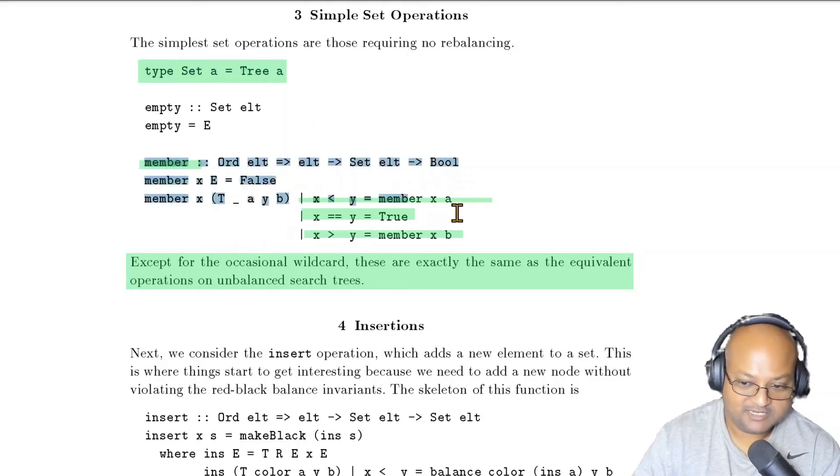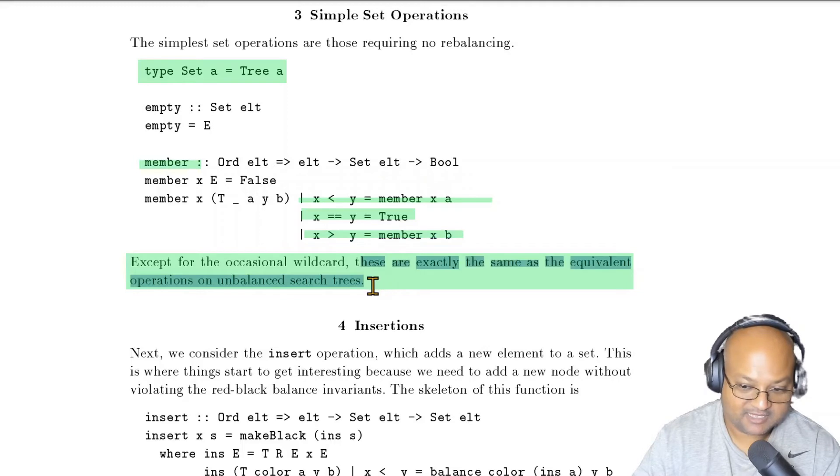The membership check is the standard membership check that you have on search trees. It utilizes the property that everything in the left subtree is less than the element in the node, and everything in the right subtree is greater than the element at the node. So if the thing you're looking for is less than the current element in the node, you recursively look in the left subtree. If it's equal, then you found it. And if it's greater, then you go look in the right subtree. So that's fairly standard as search trees go.